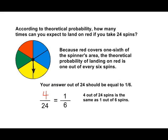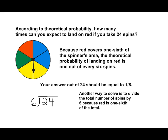Another way to solve this problem is to take the total number of spins and divide by six, because red represents one-sixth of the spinner. If the fraction was one-half, we would simply take the total number of spins and divide by two. Or if it was one-third, we would divide by three, and so on.